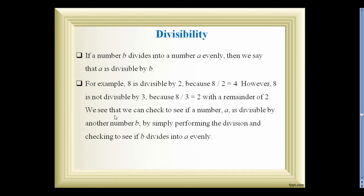We write 8 ÷ 2 = 4. And 8 is not divisible by 3; we write 8 ÷ 3 = 2 with a remainder of 2. We can check whether a number a is divisible by another number b by simply performing the division and checking to see if b divides into a evenly.